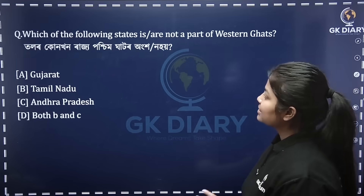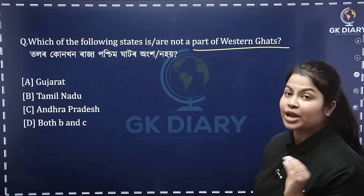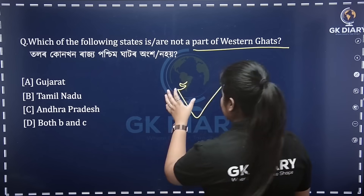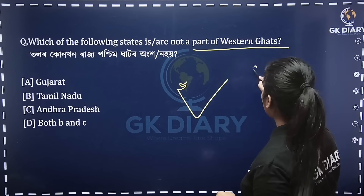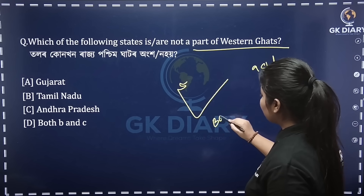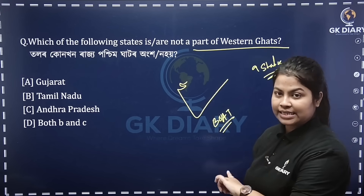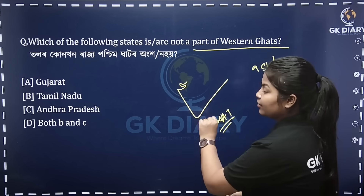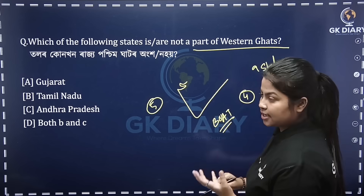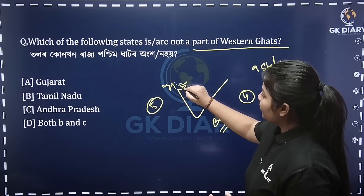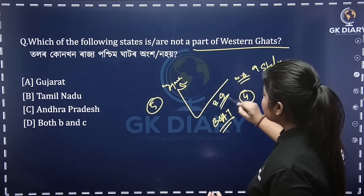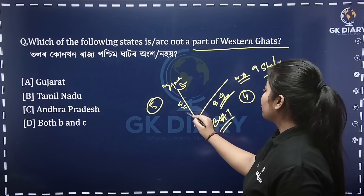Next question: which of the following states is not a part of Western Ghats? What are Western Ghats and Eastern Ghats? What are coastal plains? This state is West Bengal. The one thing is Eastern Ghats and the one thing is Western Ghats.